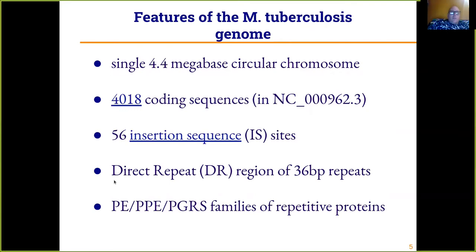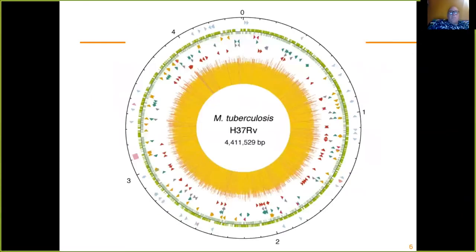The genome of Mycobacterium tuberculosis is a single 4.4 megabase circular chromosome. In the reference genome NC_000962.3, there are 4,018 coding sequences, 56 insertion sequence sites, and a direct repeat region of 36 base-pair repeats with non-repetitive spacers between them. It also contains the PE/PPE/PGRS family of repetitive proteins. Here in this diagram we can see the insertion sequence sites marked around the genome, the direct repeat region, and the PE/PPE/PGRS genes.